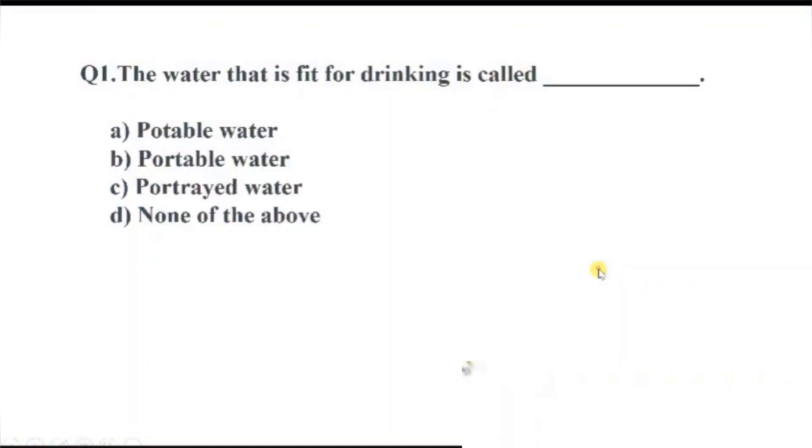Question number 1. The water that is fit for drinking is called dash. Option A, potable water. B, portable water. C, portrayed water. And D, none of the above. The right answer, Option A, potable water. Potable means something that is safe to drink.